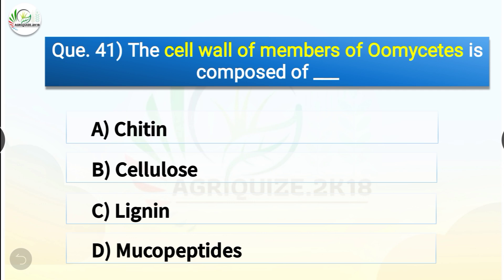Question number forty-one: The cell wall of members of Oomycetes is composed of dash. The options are chitin, cellulose, lignin, or mucopeptides. The correct answer is option B, cellulose. The cell wall of members of Oomycetes is composed of cellulose rather than chitin, and generally does not have septations.